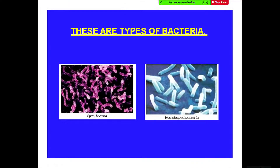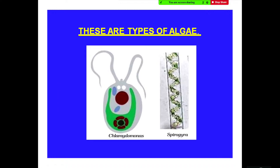These bacteria are right there on the screen — spiral bacteria and rod-shaped bacteria. Spiral bacteria have a spring-shaped kind of structure, while the rod-shaped ones are like capsules. These are some types of algae, very much found in water samples — you can see how minute and tiny they are.